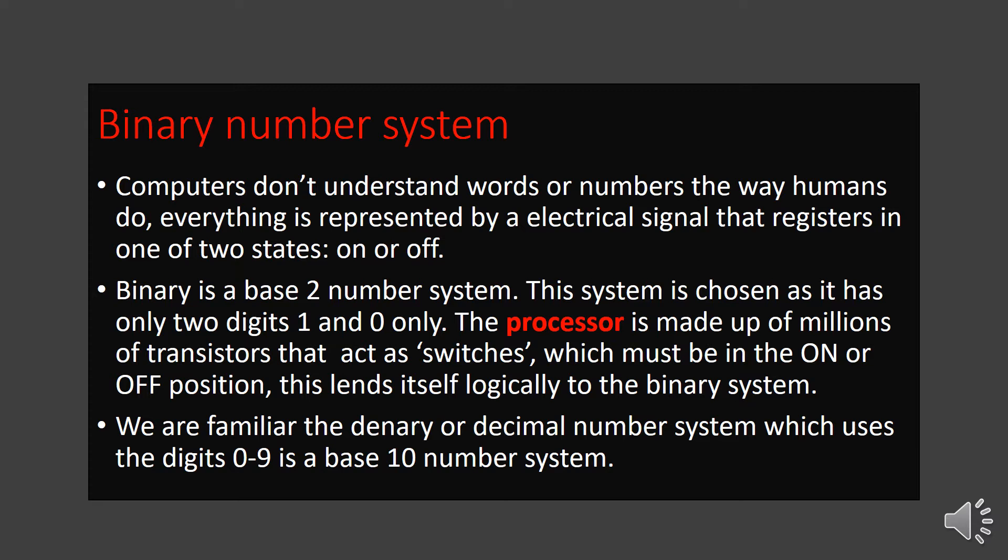Binary numbers means the computer stores information in the form of electric signals — on or off — represented by the binary number system: 0 or 1. The binary number system has only two digits: 0 and 1. Zero represents the off state and 1 represents the on state. Binary is a base 2 number system, chosen because it has only two digits.